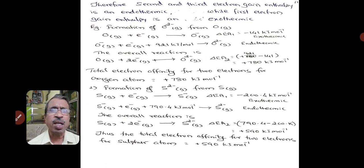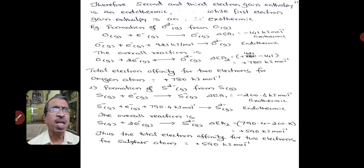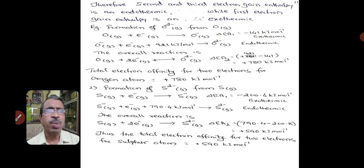The overall reaction is: O (gas) + 2e⁻ → O²⁻ (gas). Adding the two steps: +921 + (−141) = +780 kilojoules per mol. Therefore, the total electron affinity for adding two electrons to an oxygen atom is +780 kilojoules per mol, which is an endothermic reaction.